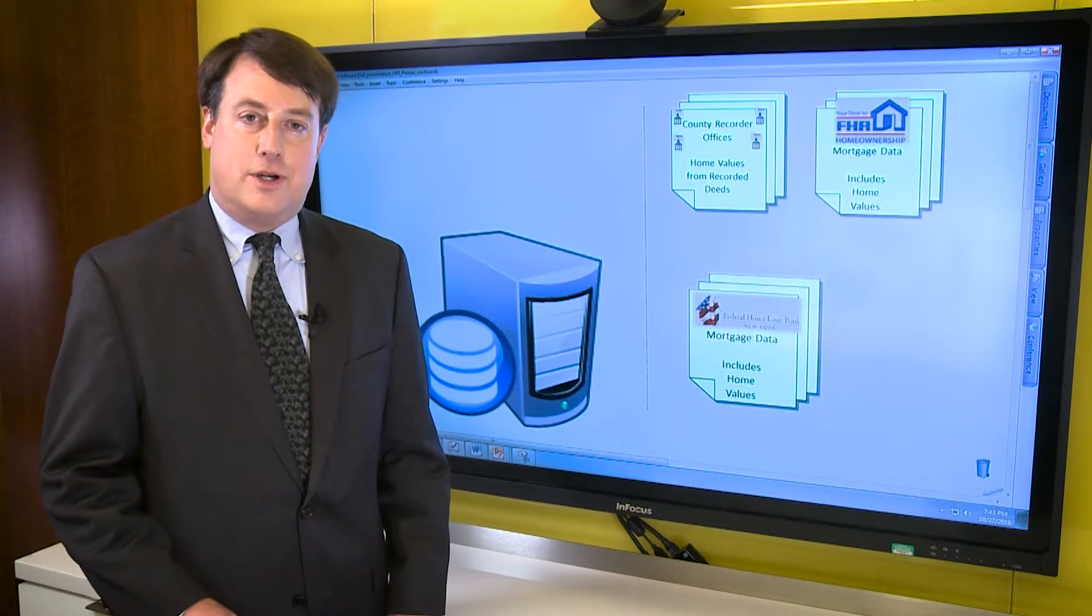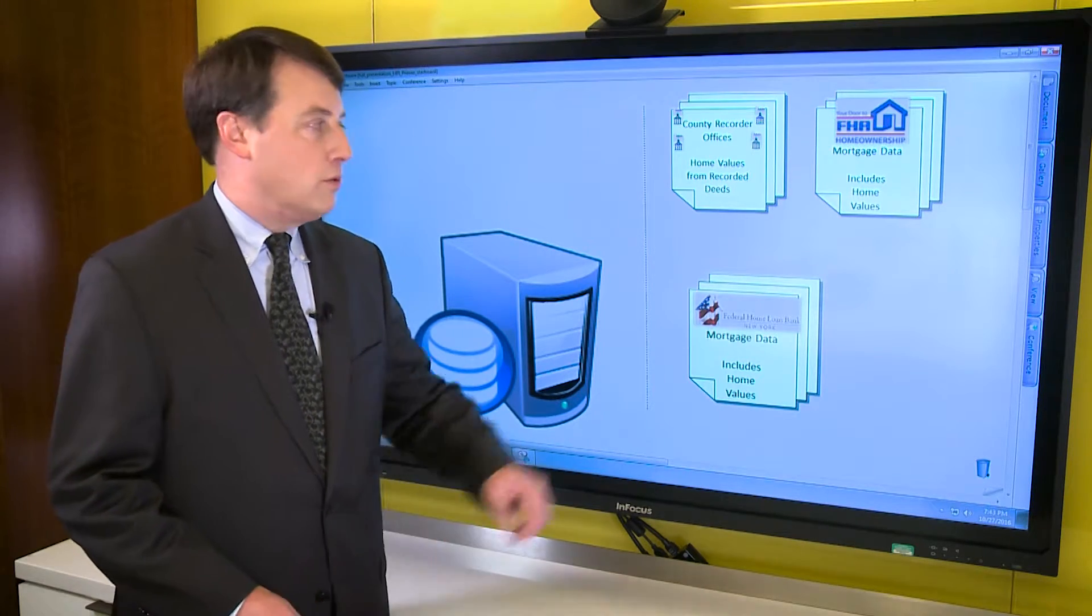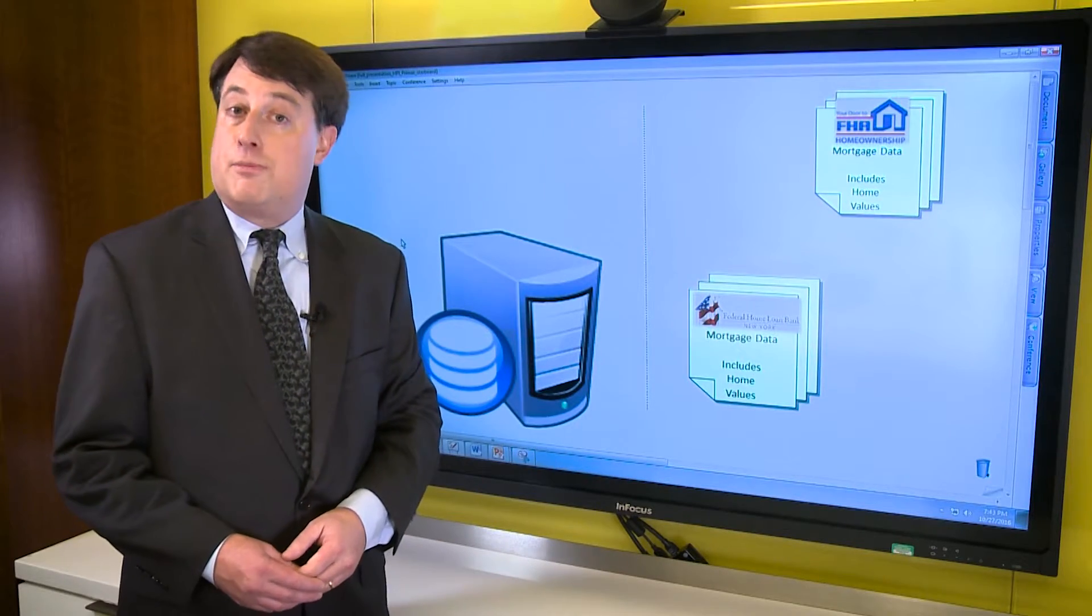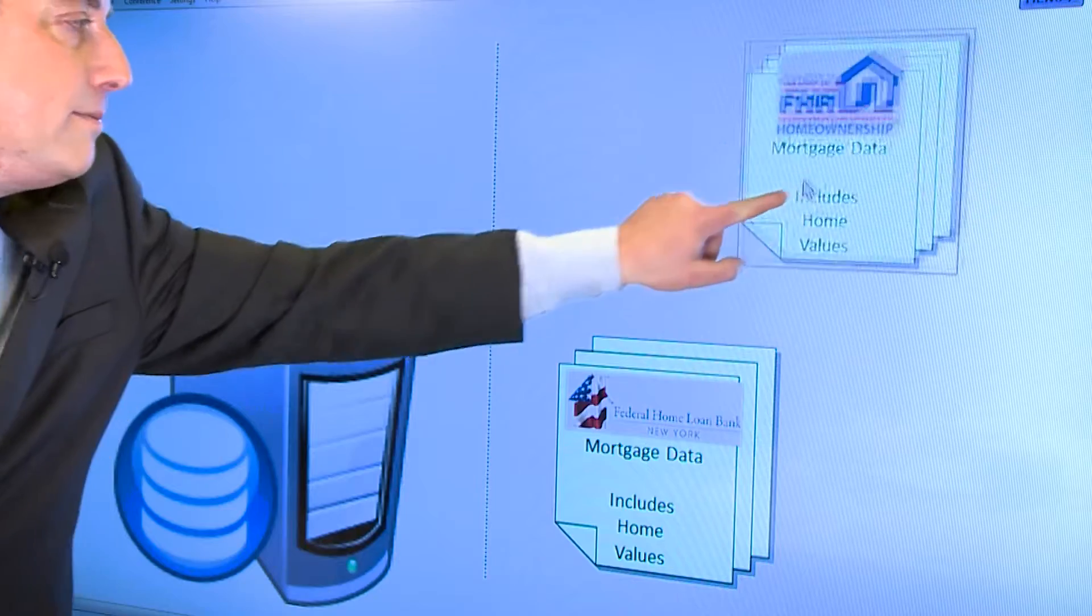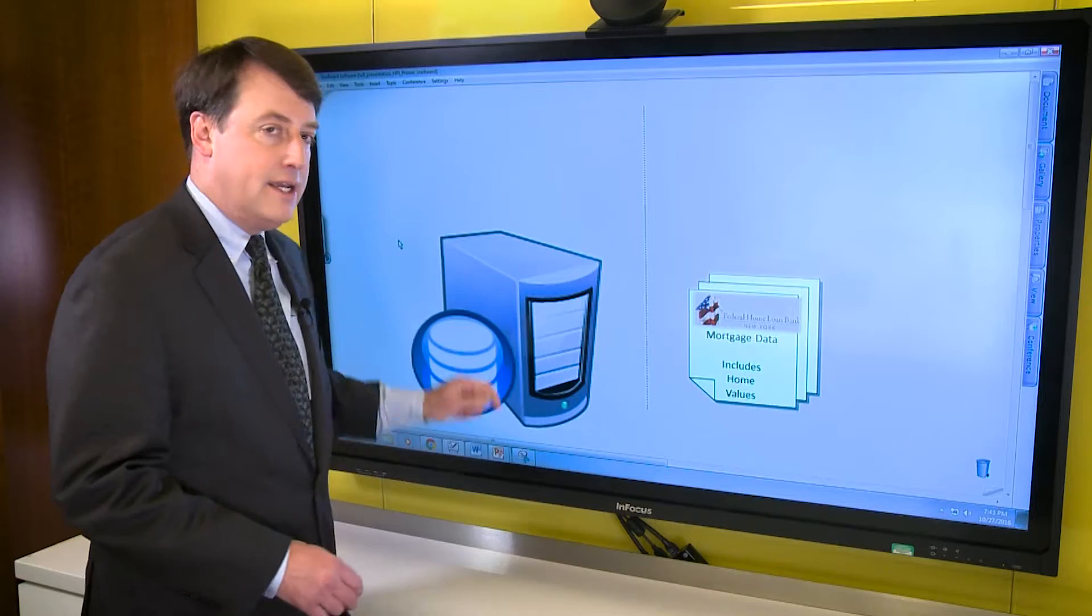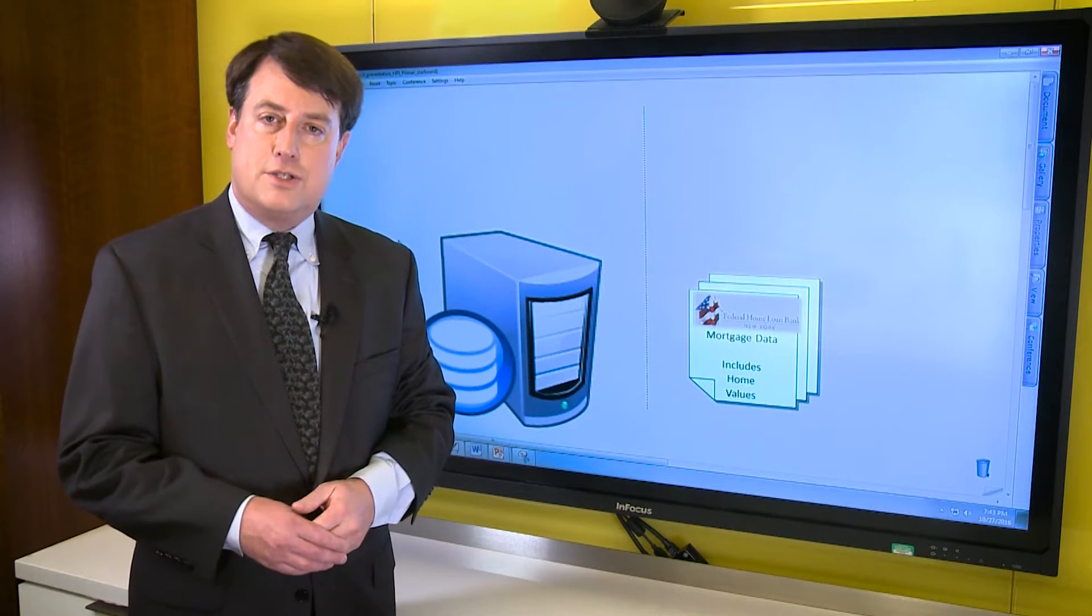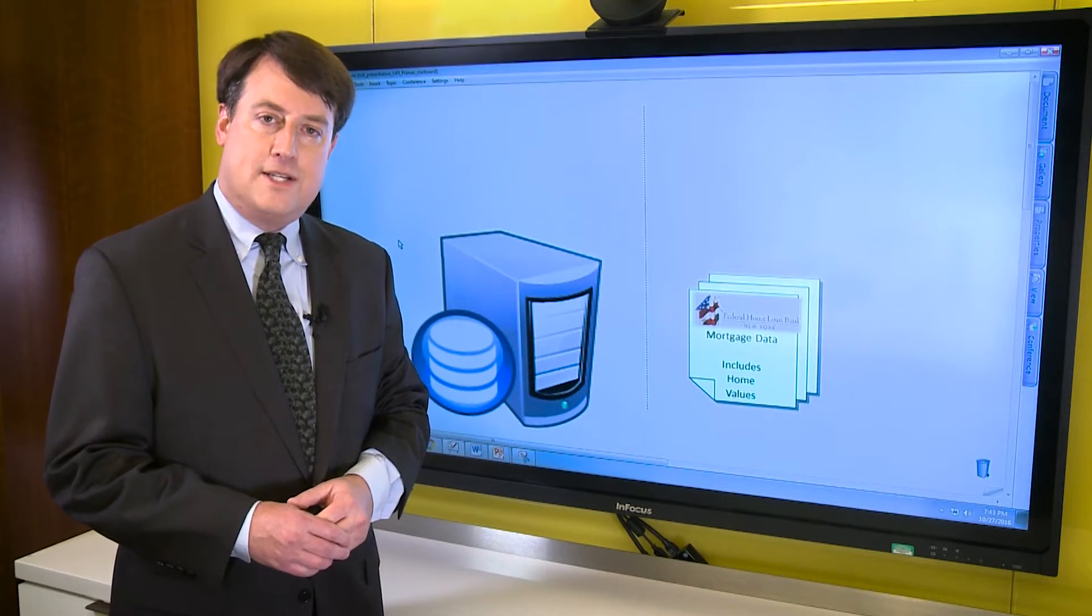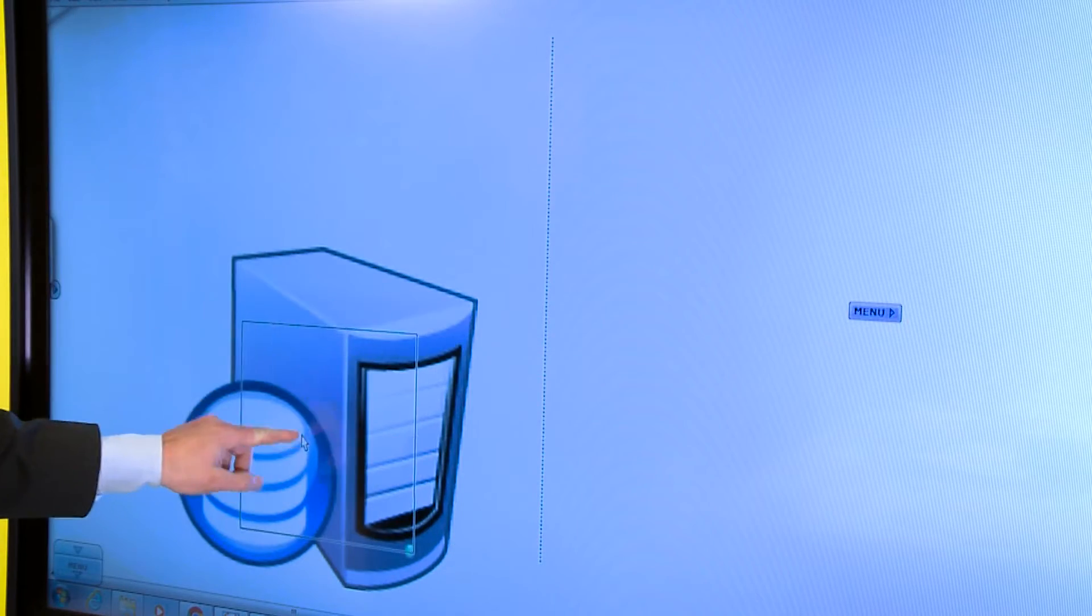For some of our indexes, we use an expanded set of information. In these cases, we also incorporate sales prices reported to county recorder offices, sales prices and appraisal values from the Federal Housing Administration, or FHA. And in one case, we also use information from mortgages that serve as collateral for advances from the Federal Home Loan Bank of New York.